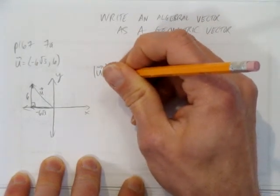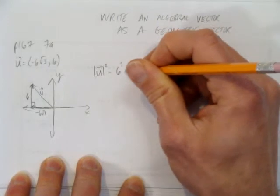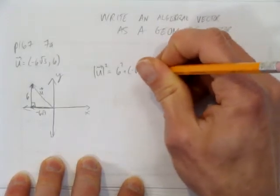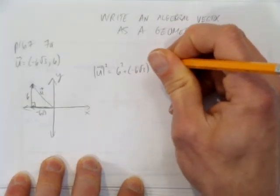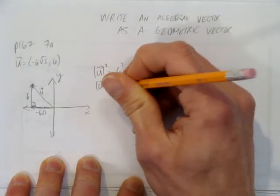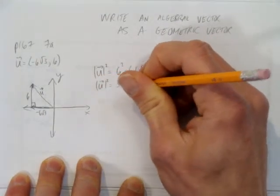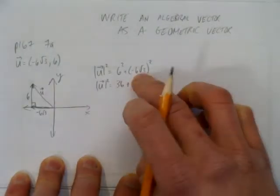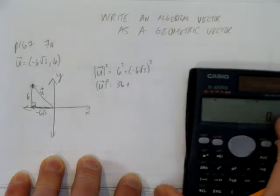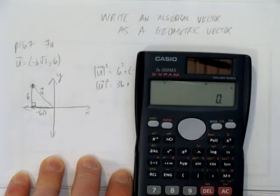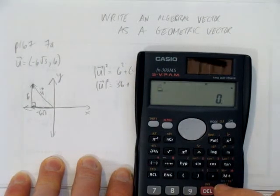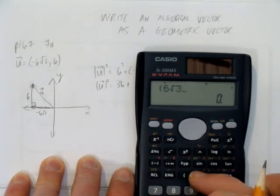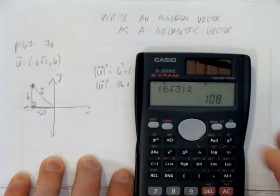That is, the magnitude of u squared equals 6 squared plus negative 6 root 3 squared. So the magnitude of u squared is just 36 plus, and you can square both of these in your head if you wanted, or take a calculator. 6 in brackets, 6 root 3 all squared is 108.